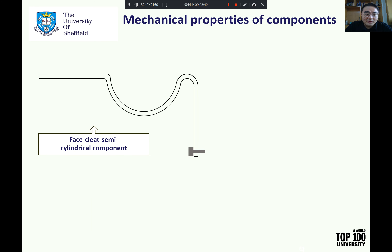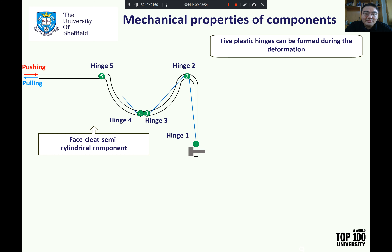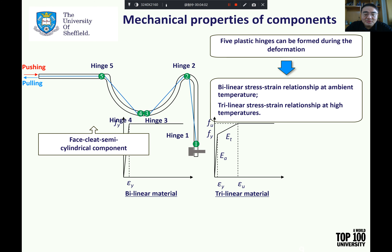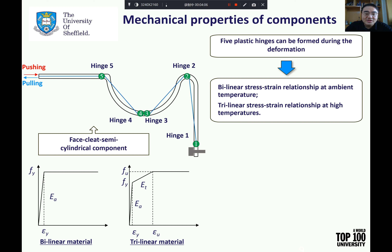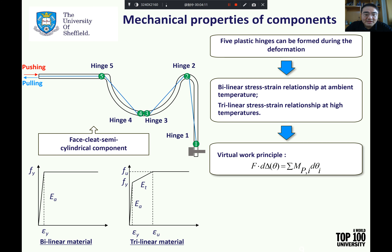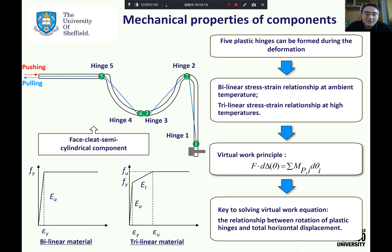The analytical models of the faceplate and semi-cylindrical component have been developed. Simple plastic theory is adopted to model the plastic behavior of the component. It is assumed that five plastic hinges can be formed during the deformation of the component, but these five hinges do not always work at the same time. A bilinear stress-strain relationship is assumed at ambient temperature, changing to a trilinear relationship at elevated temperatures. The relationship between the applied force and displacement of the component is obtained based on the virtual work principle, and the key to solving this is the relationship between rotation of the plastic hinges and total horizontal displacement.